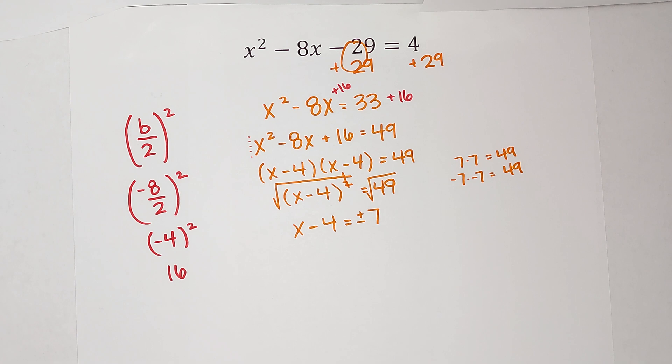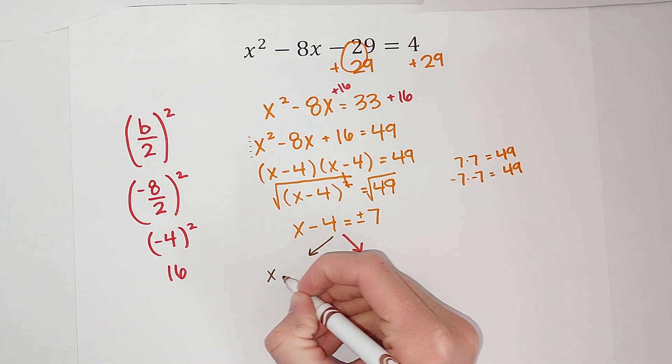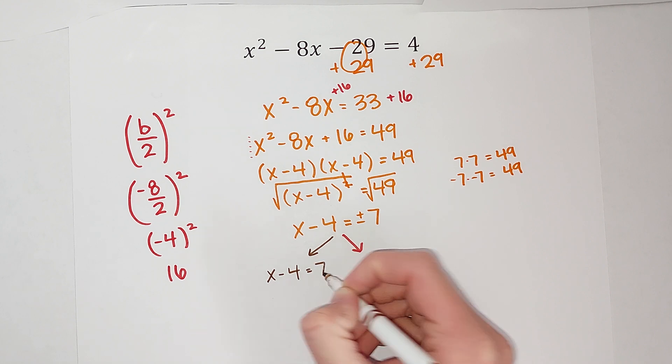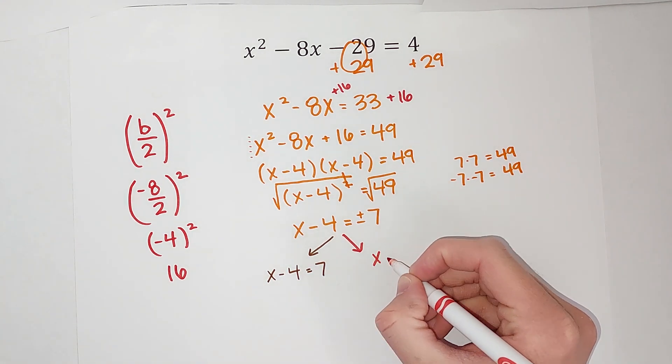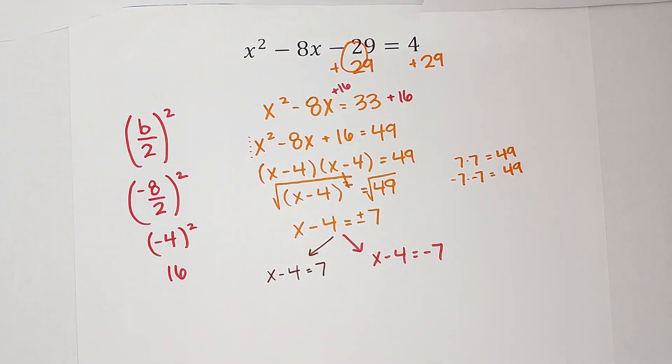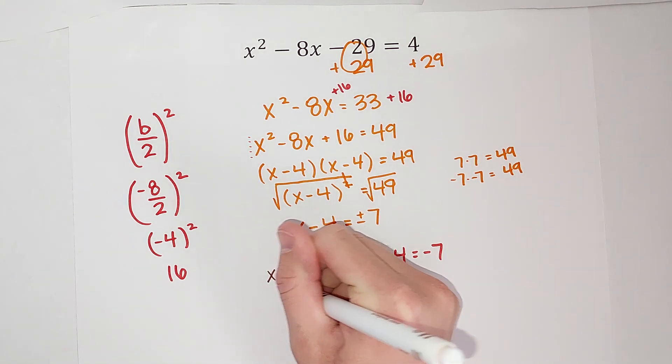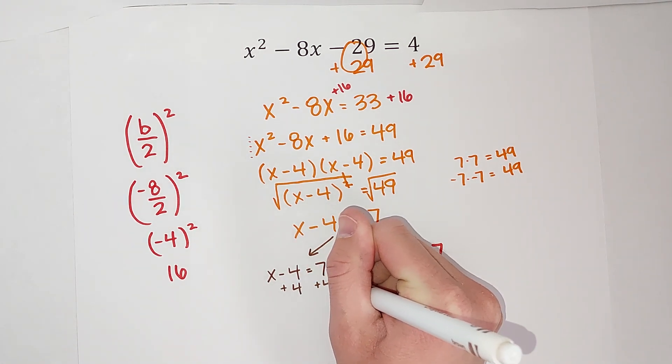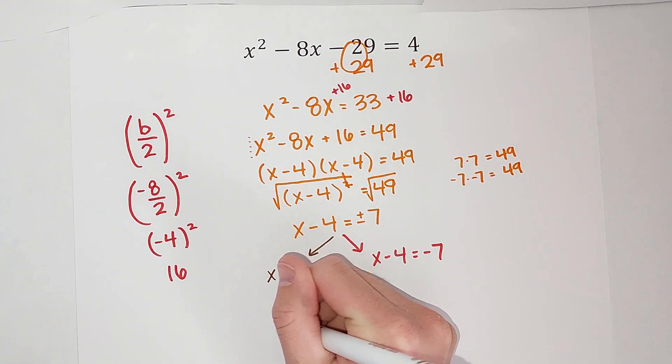Now because there are two, I kind of like to split it off. We've got one this way and one this way. On this side I'm going to have the positive 7, so I've got x minus 4 equals 7. And on the other side I'm going to have x minus 4 equals negative 7. And then I'm just going to solve both of those. So I'm going to add 4 to both sides here, and get x equals 11.